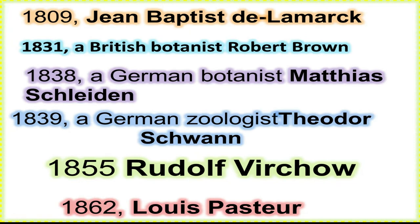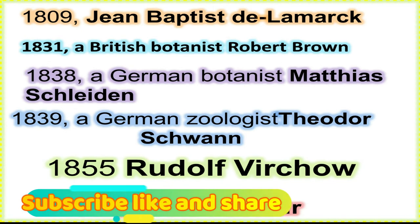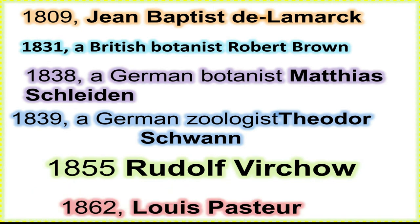In 1809, Jean-Baptiste Lamarck stated that all living things are composed of cellular tissue. Then in 1831, British botanist Robert Brown discovered that cells contain a nucleus — an important internal structure within the cell.